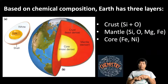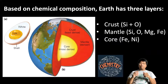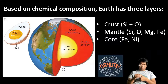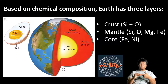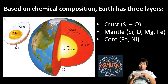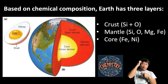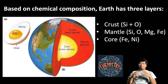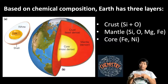Based on their chemical compositions, we can divide the Earth's layers into three main layers. The first one is the crust of the Earth, which consists of mostly silicon and oxygen. The second one is the mantle. The core consists of mostly metal elements such as iron and nickel. The mantle basically consists of a mixture between the crustal elements and the core elements — so the mantle has both silicon and oxygen, and it also has a good amount of iron, nickel, as well as magnesium.